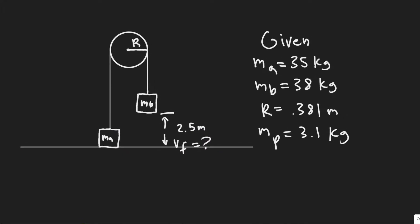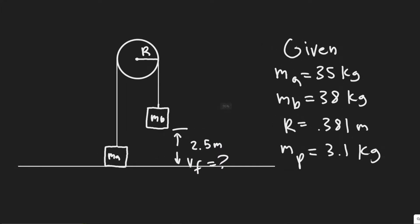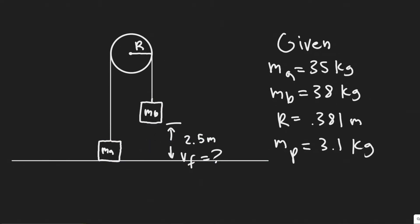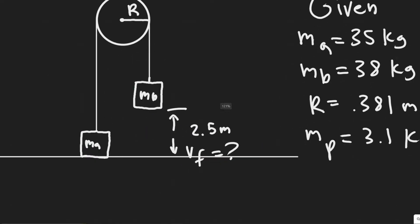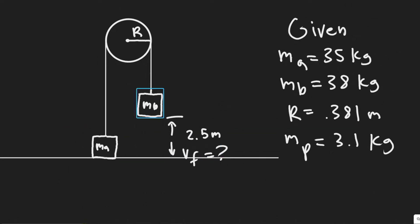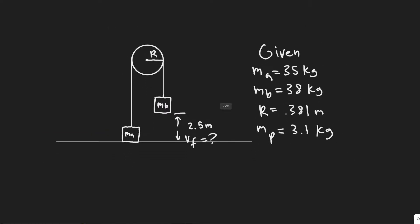When we release the system, it starts at rest. Block B will go downwards while block A goes upwards, because the mass of block B is greater, so gravity pulls it down more and pulls the lighter block A up. Right before block B hits the ground is when we want to find its velocity.